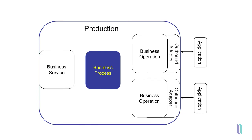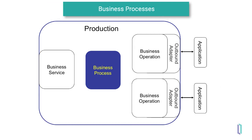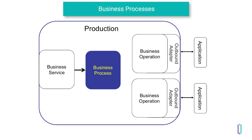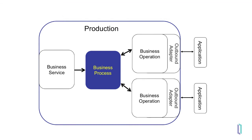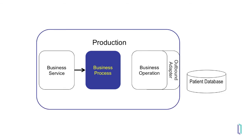A business process is used to implement business logic that decides where an incoming request should be sent, as well as to orchestrate calls to business operations which will communicate with external applications and resources to retrieve data. A business process can send requests to many business operations or to other business processes if further logic or flow control is needed. A business process would send a request to a business operation when it needs to communicate outside of the production. For example, if the business process determined that data was needed from an external patient database, it would send a request to a business operation that would query the patient database and return a query result. The business operation would then send a response to the business process for further processing.